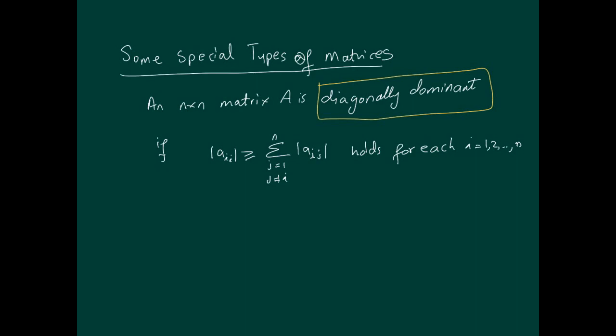In this video, we're going to look at some special types of matrices. These are important for the next topic that's coming up, which is an alternate decomposition method called Cholesky decomposition. And in addition to that, a very important property of matrices, which is positive definiteness.